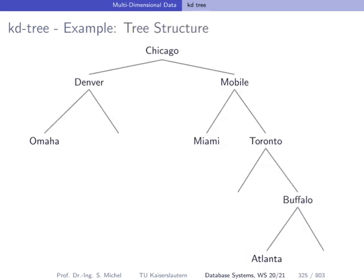The resulting structure is a binary tree — for two-dimensional data each split covers one dimension, not all dimensions as the quadtree does. The shape of the KD-tree depends on the insertion order.